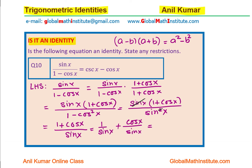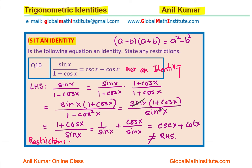This is equal to cosecant x plus cotangent x. But the right-hand side of the original equation was cosecant x minus cos x, which is not equal to what we obtained. Therefore, we can say that it is not an identity. As far as the restrictions go, cos x is not equal to 1. So we have shown this is not an identity, and the left side actually simplifies to cosecant x plus cotangent x rather than the given expression.